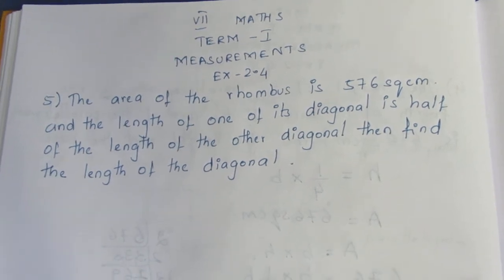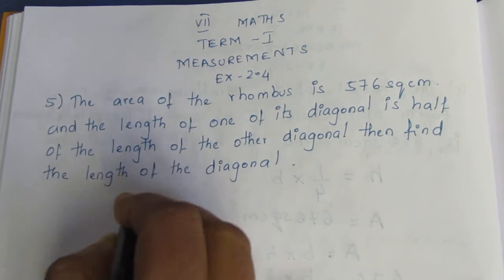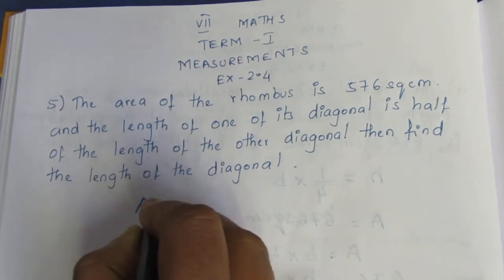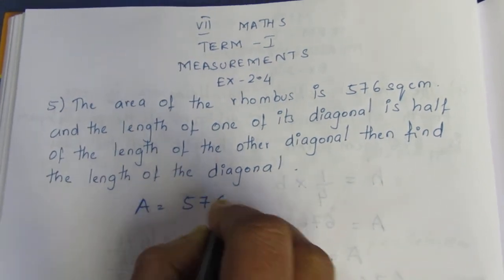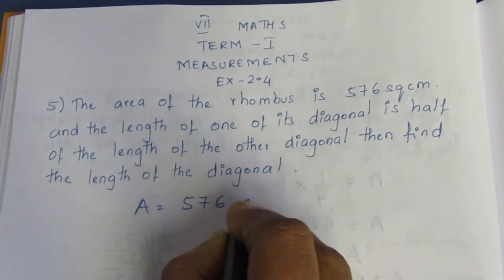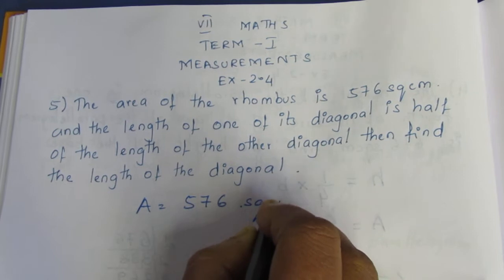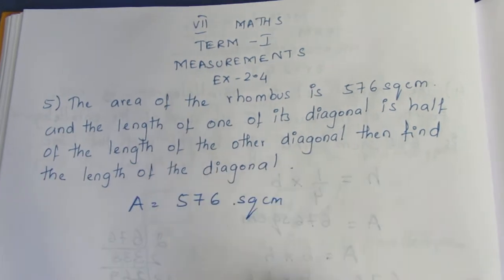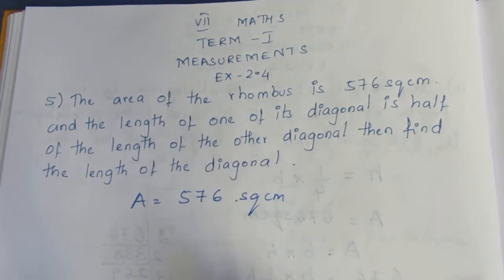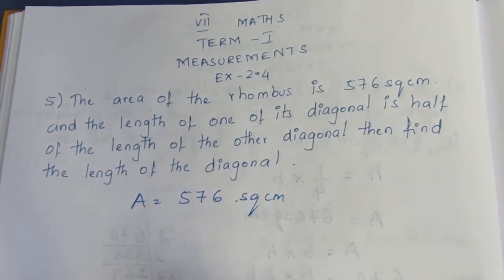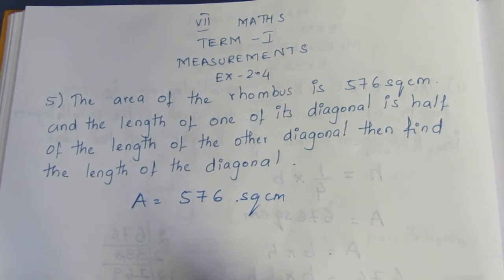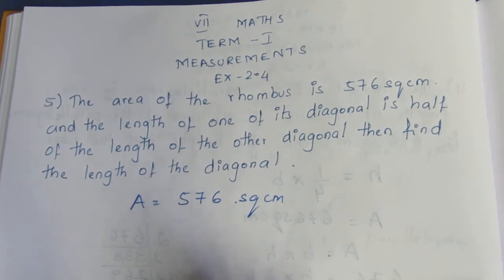The area of the rhombus is 576, so area equals 576. The length of one of its diagonals is half the length of the other diagonal. We need to find the length of the diagonals.